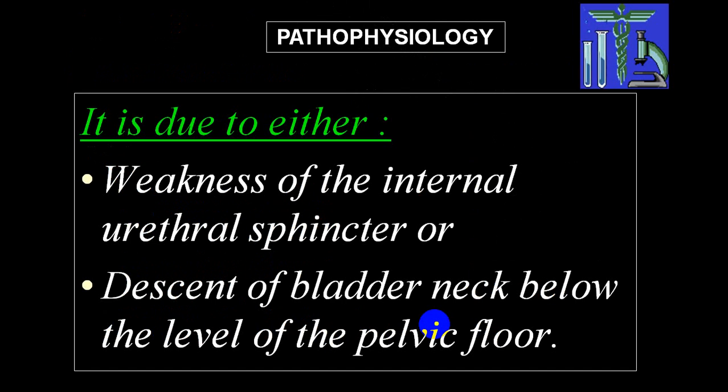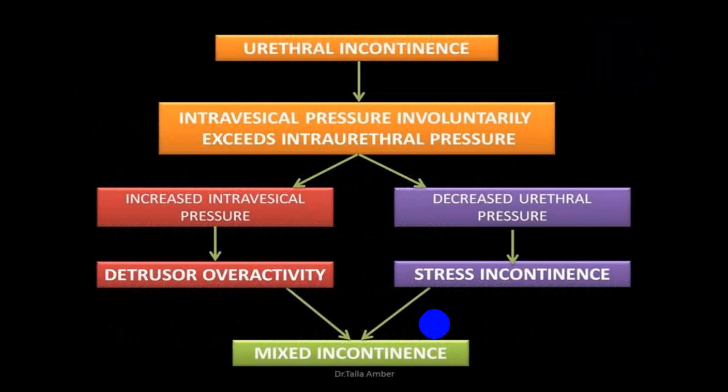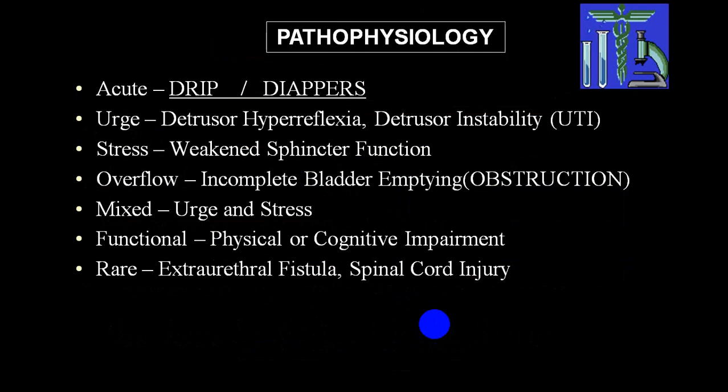The pathophysiology is very commonly due to weakness of the internal sphincter or descent of the bladder neck below the level of the pelvic floor. In acute incontinence it is usually temporary. In urge incontinence it is because of detrusor hyperreflexia or detrusor instability. In stress incontinence there is weakness in the sphincters, particularly internal and external sphincters. Overflow is due to obstruction causing overflow dribbling. Mixed variety is a combination of urge and stress incontinence. Functional incontinence is due to cognitive and physical impairment. Continuous incontinence is rare, due to congenital anomaly like extra-urethral fistula or spinal cord injury.